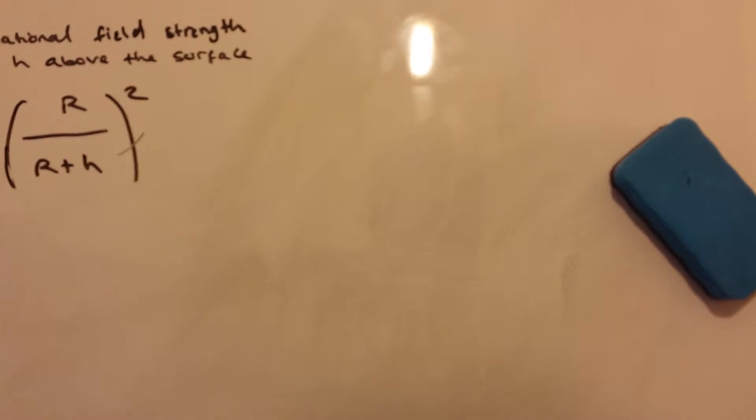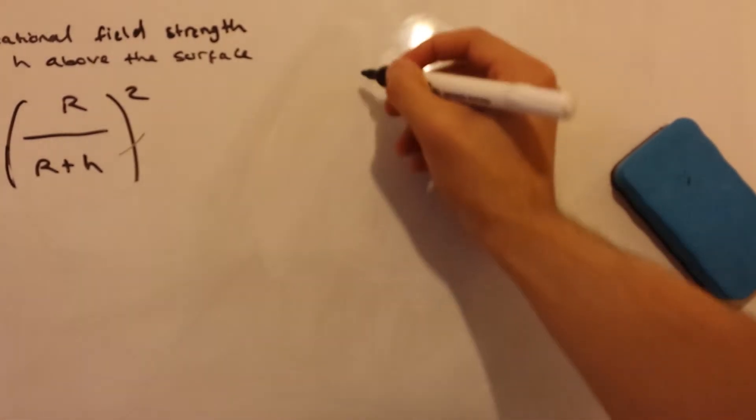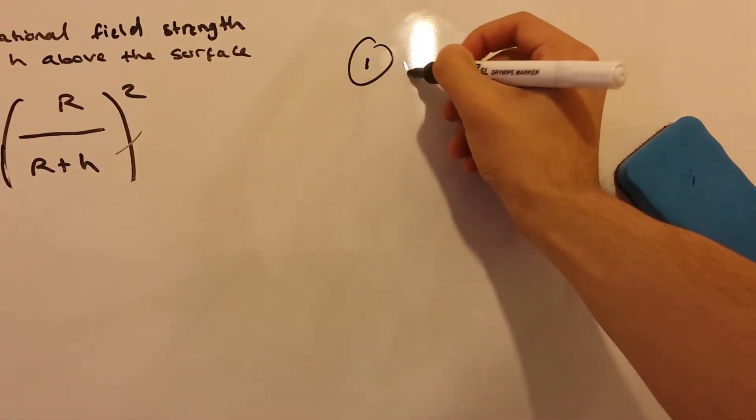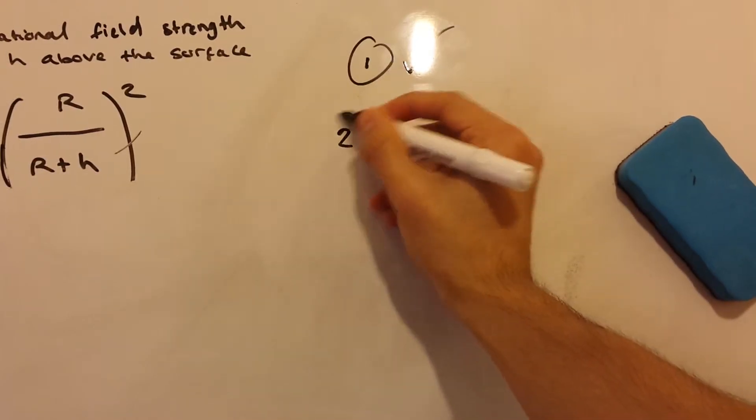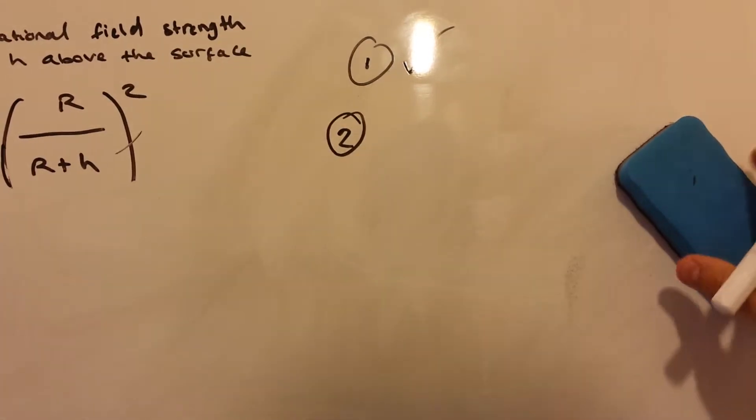Okay, so that's the first step done. Now, let's find a general equation for gravitational field strength.